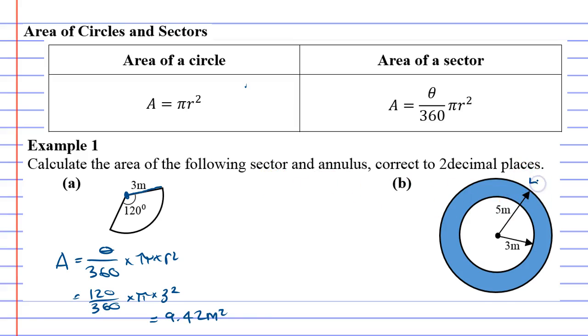If I'm trying to find the area of the large circle, I'll use the subscript L. I use the formula pi times r squared, and the large circle has a radius of five, so pi times five squared. The area of the large circle, pi times five squared to two decimal places, is 78.54 meters squared.